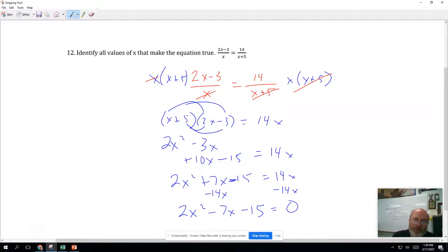Here, let's plug this in the quadratic formula. We get X equals the opposite of B plus or minus square root B squared minus 4AC all over 2A. Where A is 2, B is negative 7, C is negative 15.